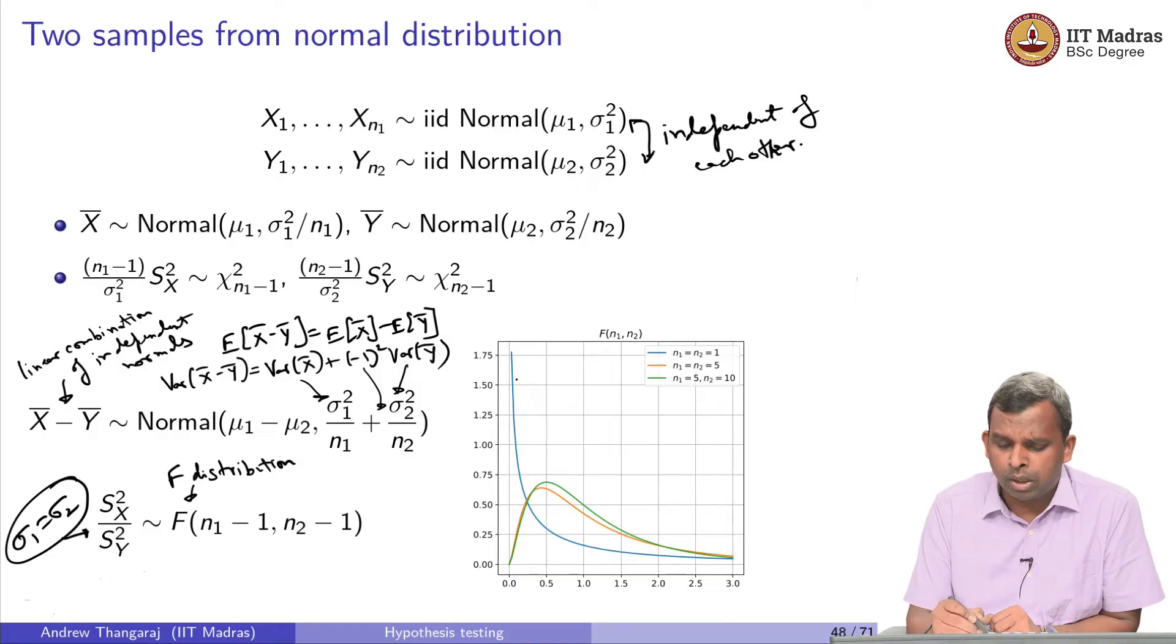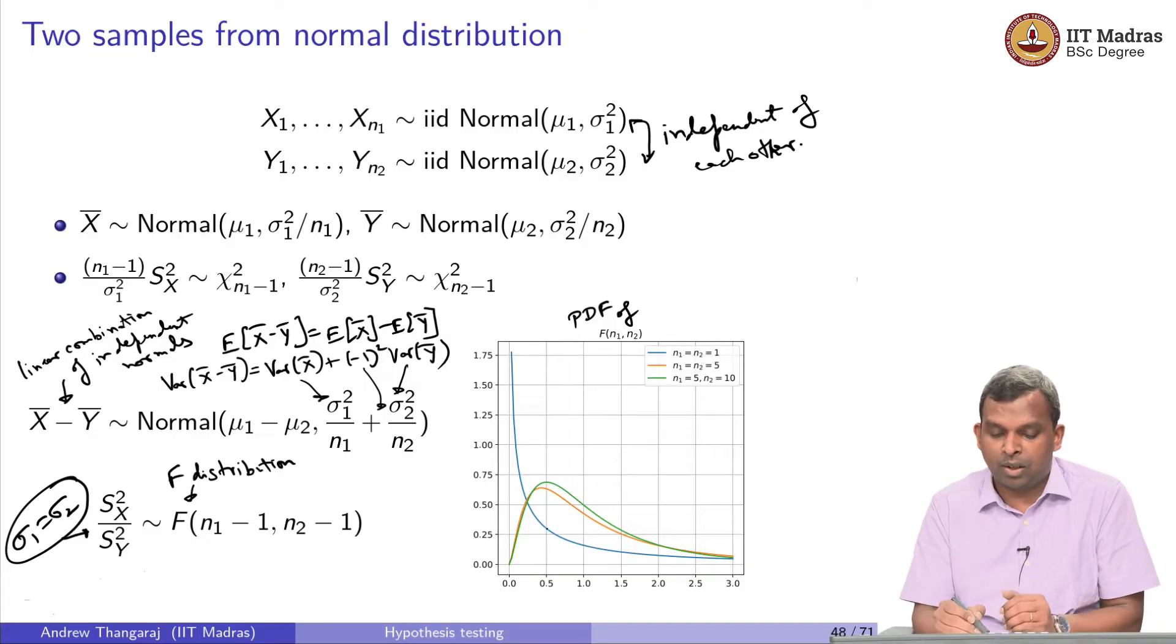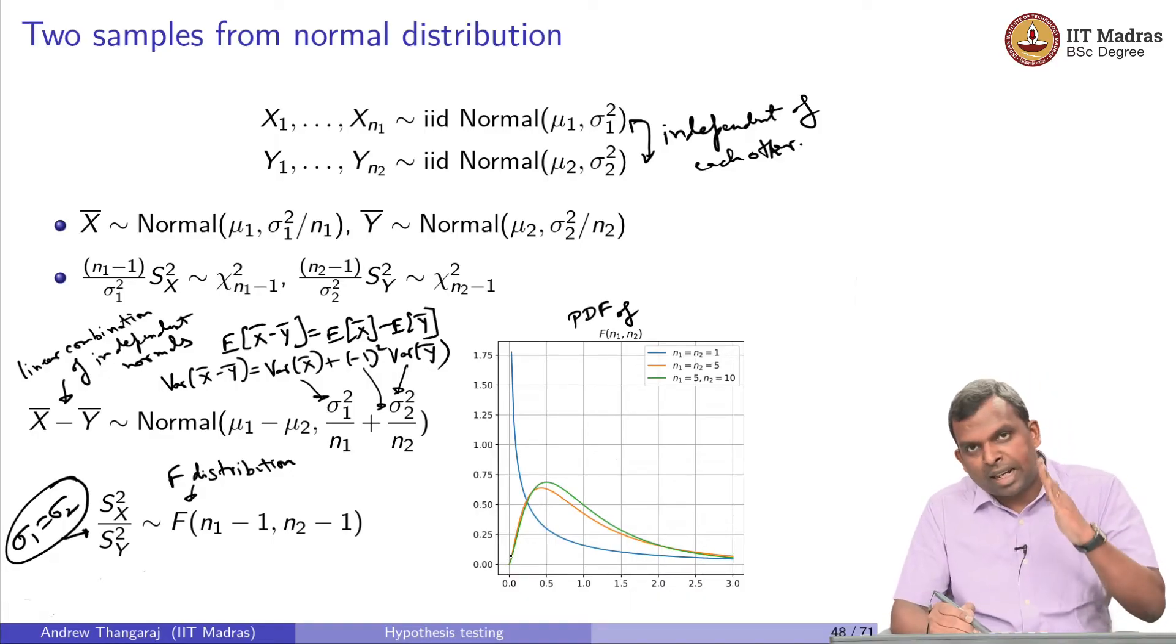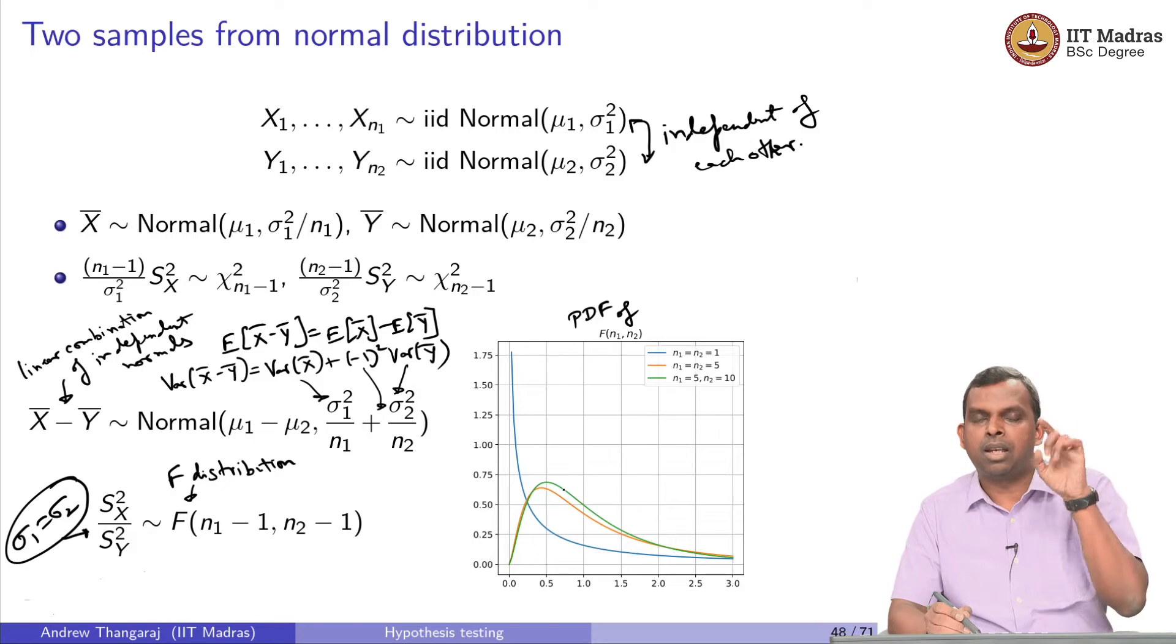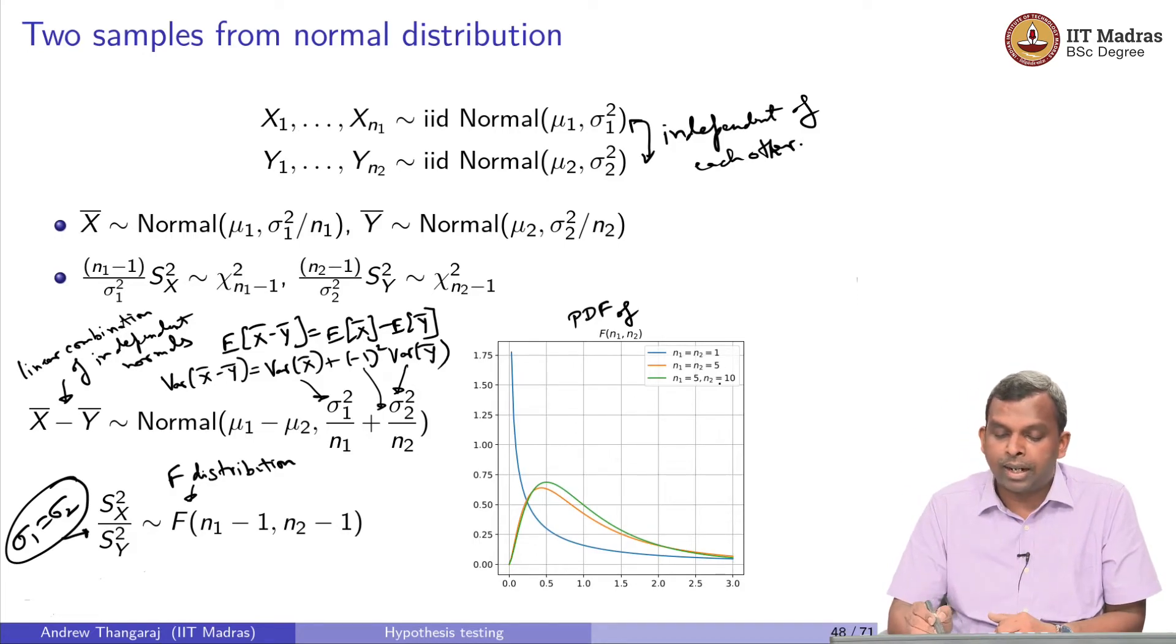What is this F distribution? For different values of n1, n2, I have shown the PDF here. If n1 and n2 are 1, it looks like sort of exponential fall. If n1 and n2 is equal to 5, it sort of rises and then has an exponential fall. It is sort of like some X power something, e power minus something like that figure for n1 different and n2 different.